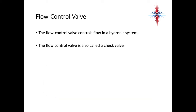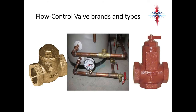Flow control valves — also called check valves — control flow direction in a hydronic system. Since hot water rises and cold water falls, without check valves gravity could cause heating in areas you don't want heated. There are two types: a brass valve, which can be used in domestic potable water, and a cast-iron valve, which cannot be used in any water people could consume. Water is a food and can be contaminated by rust, so always use the appropriate valve.